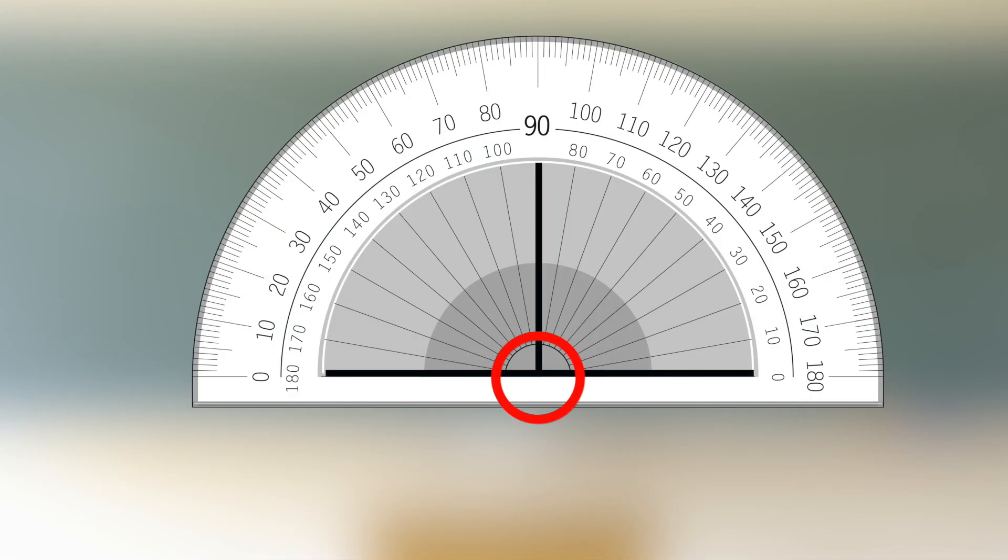Align the center of the protractor with the vertex of the angle. The red angle measures 60 degrees. The blue angle measures 130 degrees. The angle using the black line measures 90 degrees. If the angle is measured from right to left, use the bottom row of numbers. If it's measured from left to right, use the top row of numbers.